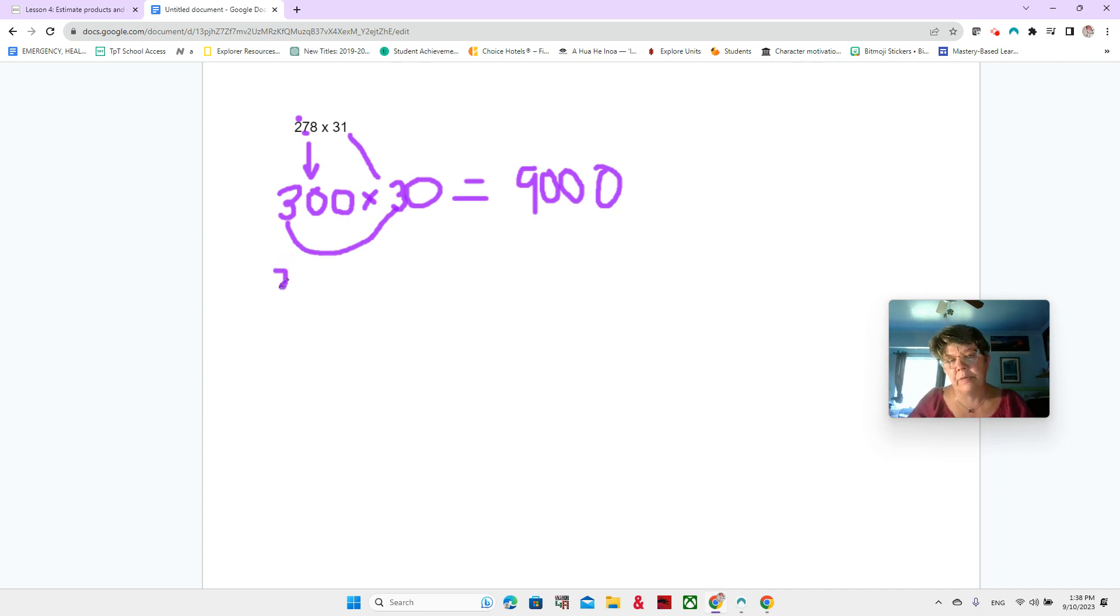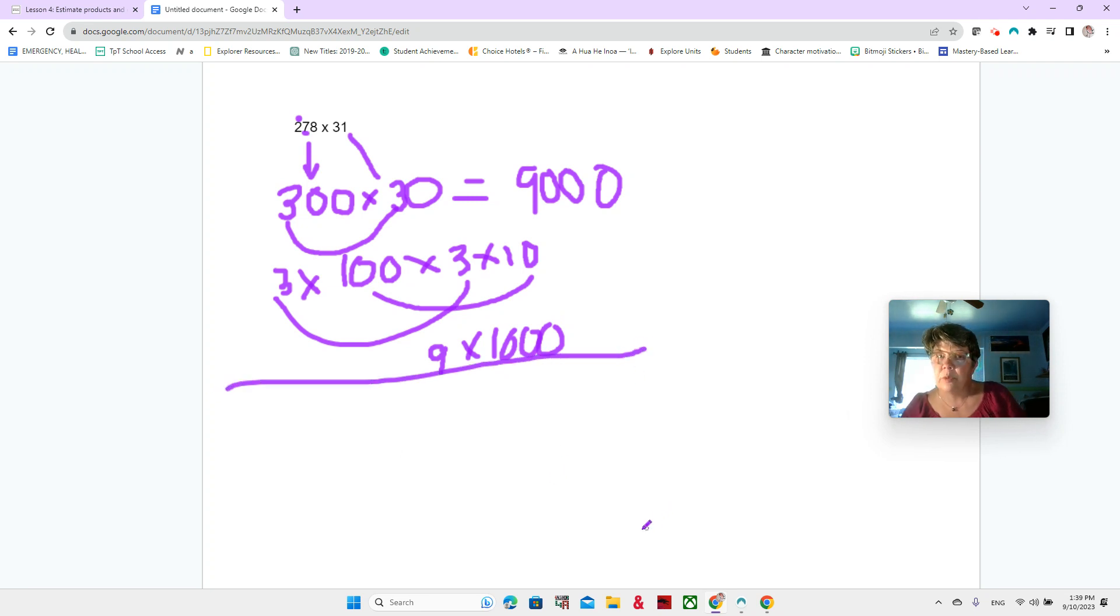And if you want to think of that as three times 100 times three times 10, if that helps you, then you can see that our 10 times 100 is 1000 and our three times three is nine. So that would be nine times 1,000, which is the same as 9,000. There's sometimes other ways to do it. It kind of depends on how you're thinking about numbers, what your number skills are.